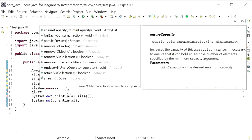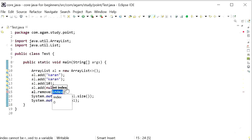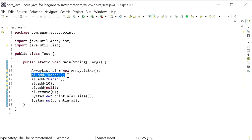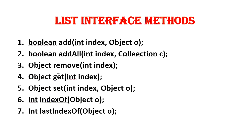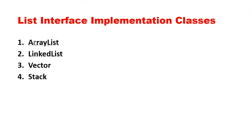ArrayList also implements the RandomAccess interface, so any random element can be accessed with the same speed. The next implementation class is LinkedList. The underlying data structure for LinkedList is a doubly linked list. Insertion order is preserved, duplicate objects are allowed, heterogeneous objects are allowed, and null insertion is possible. LinkedList implements Serializable and Cloneable interfaces but does not implement RandomAccess, so it is a worst choice if frequent retrieval is needed.